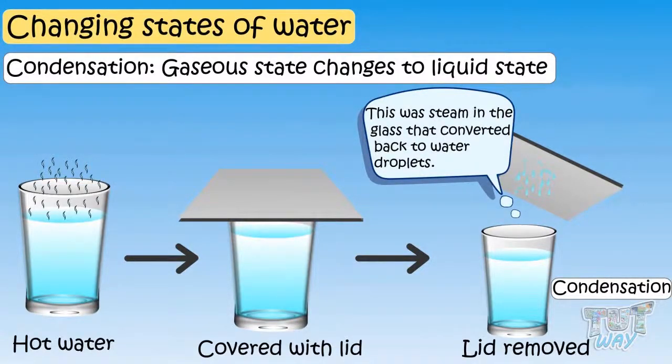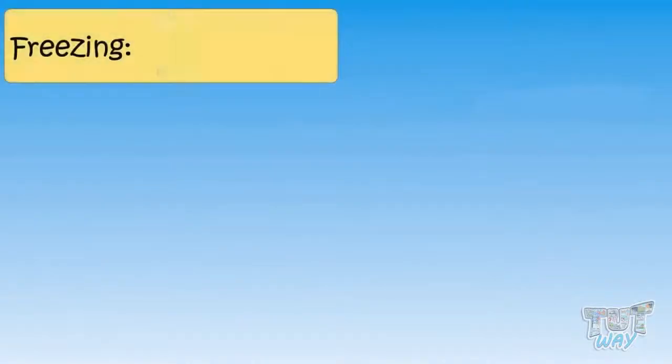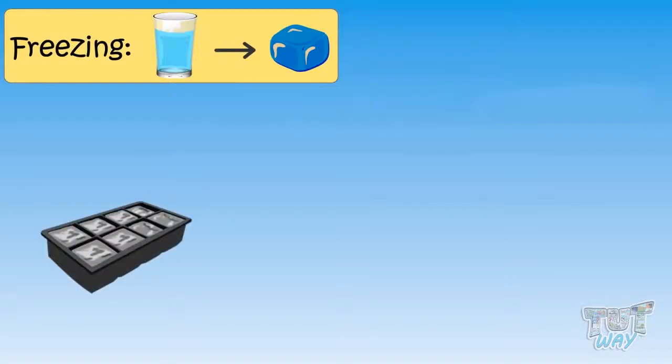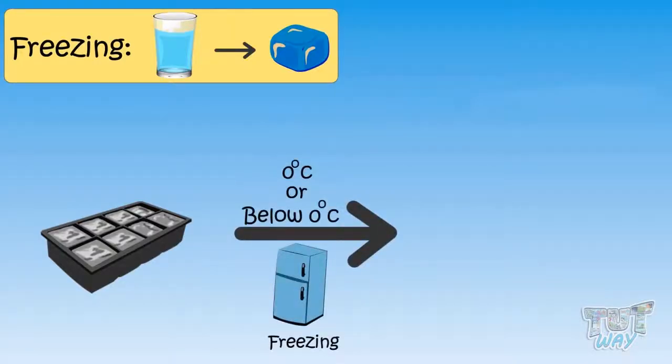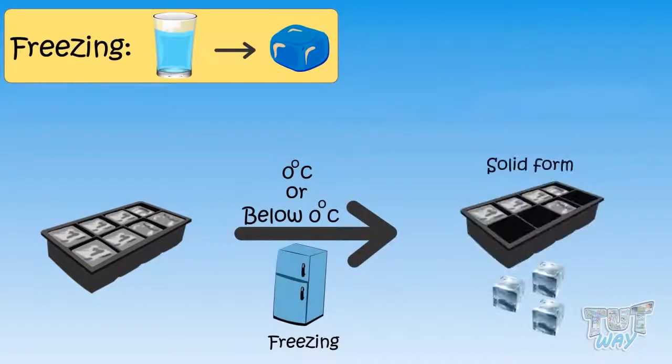Now let's see how the liquid form of water changes to a solid form of water. When the water is cooled down to a certain temperature, like zero degrees or even below, water changes to a solid form. And this is called freezing.